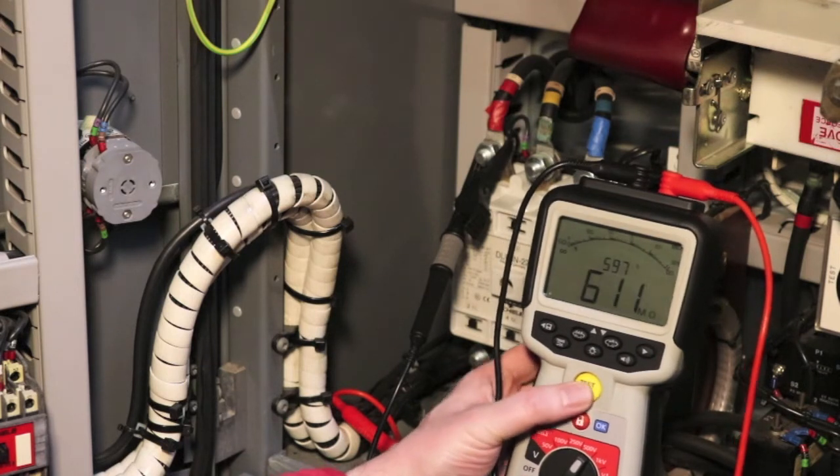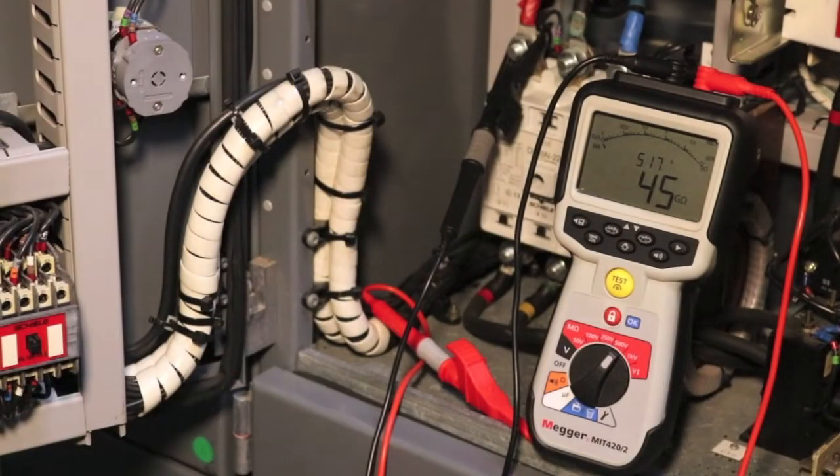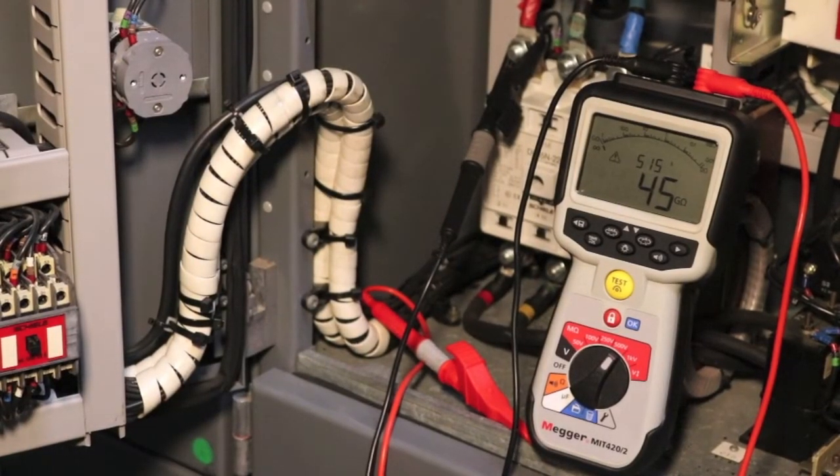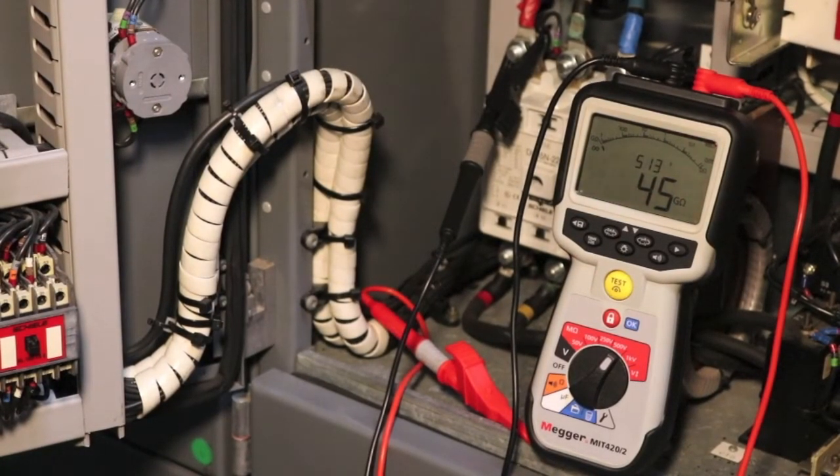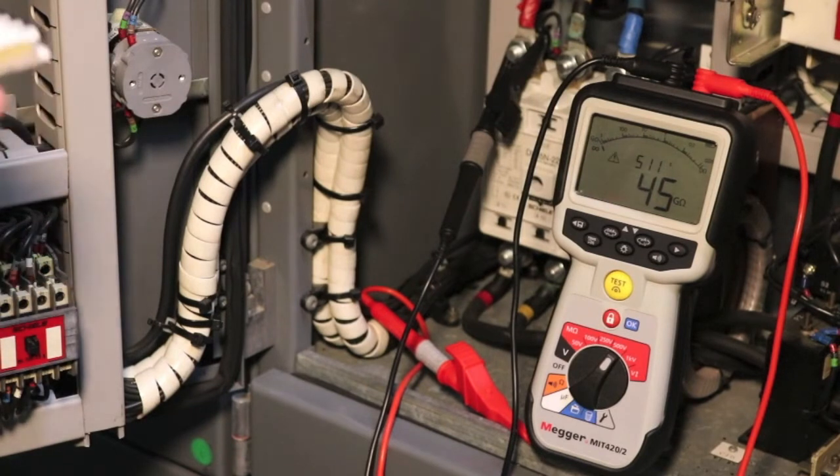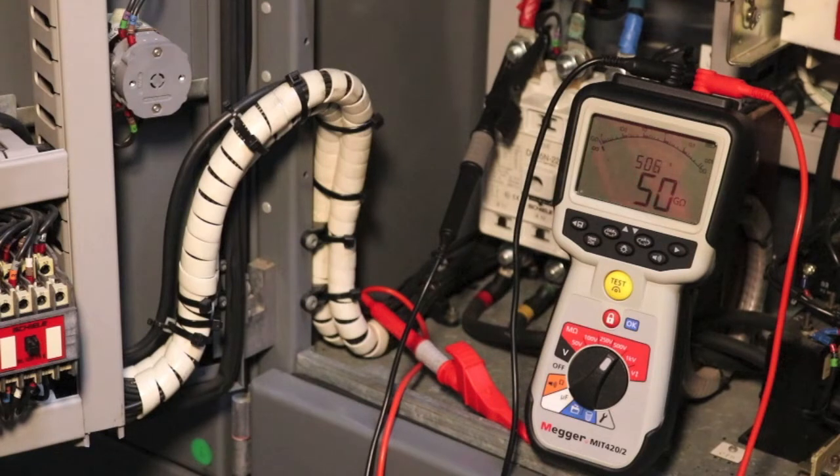So that's the polarisation index test started now. You can see it's got up to 45 gig ohms already. I will take a reading every 60 seconds and record that so I can then plot the insulation curve over the whole 10 minutes of the test.